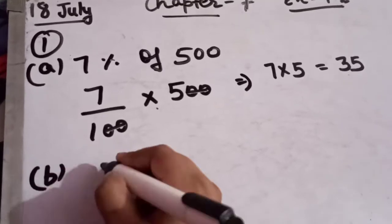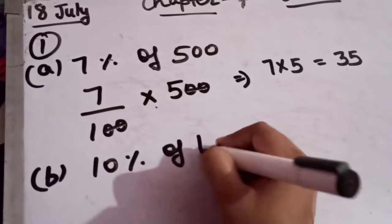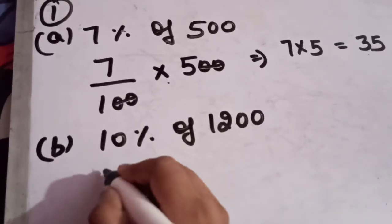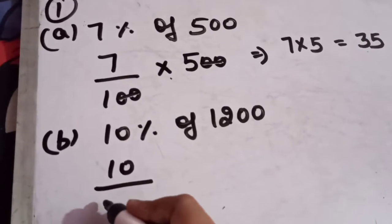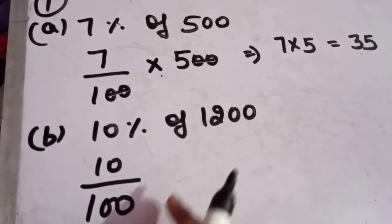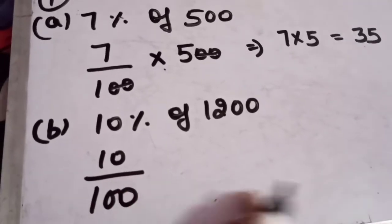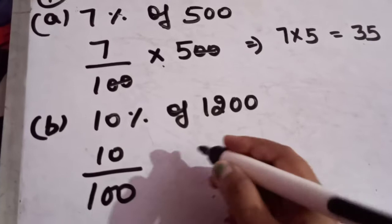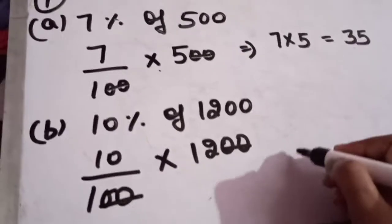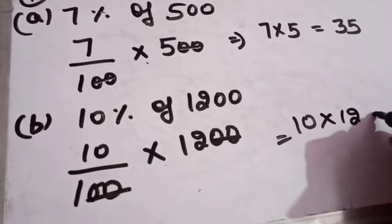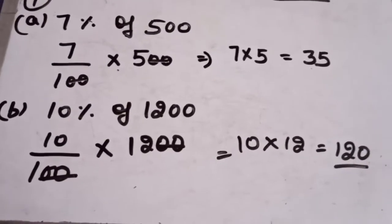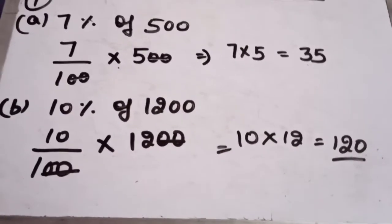Part B: 10% of 1200. Again, remove the percentage sign, so 10/100 × 1200. Cancel the zeros — 0 cut by 0 — leaving 10 × 12 = 120. So 10% of 1200 equals 120.